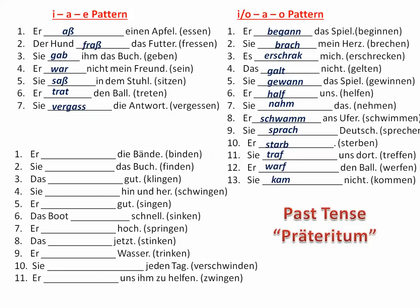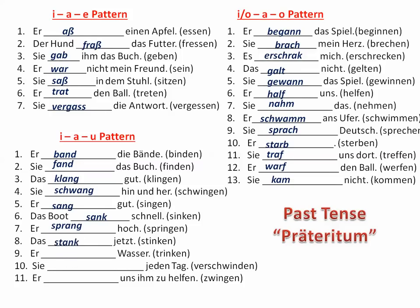One thing to mention about schwimmen: it can also use haben as the helping verb if you say for how long you have swum — for example, ich habe zwei Stunden geschwommen. But if you're saying where you were swimming to, giving it direction, you use sein — er ist ans Ufer geschwommen. Group 3 simple past: er band die Schuhbänder; sie fand das Buch; das klang gut; sie schwang hin und her; er sang gut; das Boot sank schnell; er sprang hoch; das stank jetzt; er trank das Wasser; sie verschwand jeden Tag; und er zwang uns ihm zu helfen.